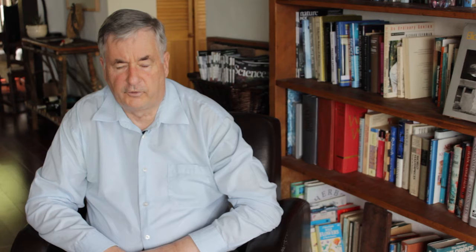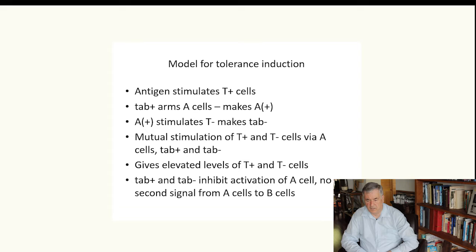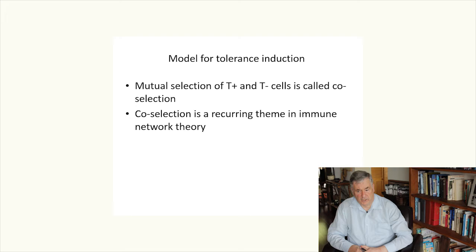So to reiterate, in the model for tolerance induction, an antigen stimulates T plus, tab plus A cells, which make A plus. A plus stimulates T minus to make tab minuses. It's mutual stimulation of T plus and T minus cells via the A cells, tab plus and tab minus. This gives an elevated level of both T plus and T minus cells and the populations inhibit activation of an A cell. No second signal is required because the A cell is actually not activated in this particular process. This mutual stimulation is called co-selection. Co-selection is a recurring theme in our immune network theory.